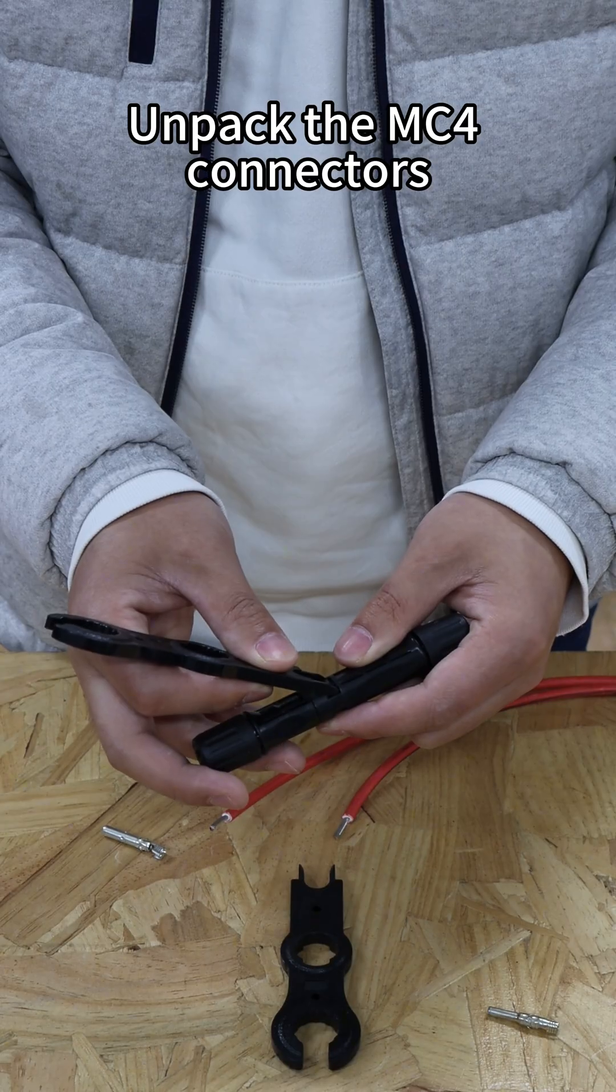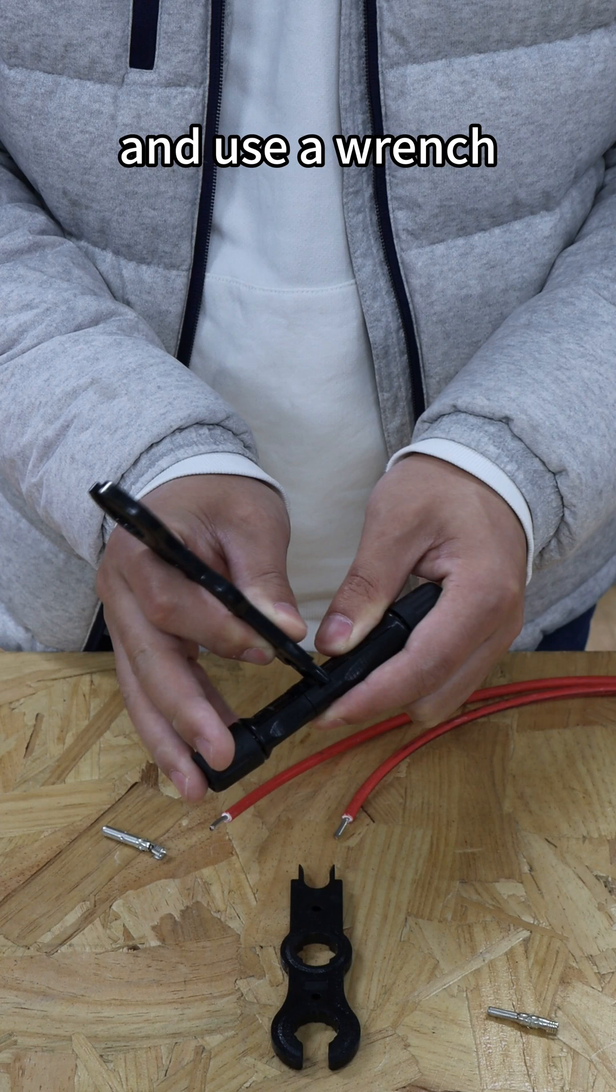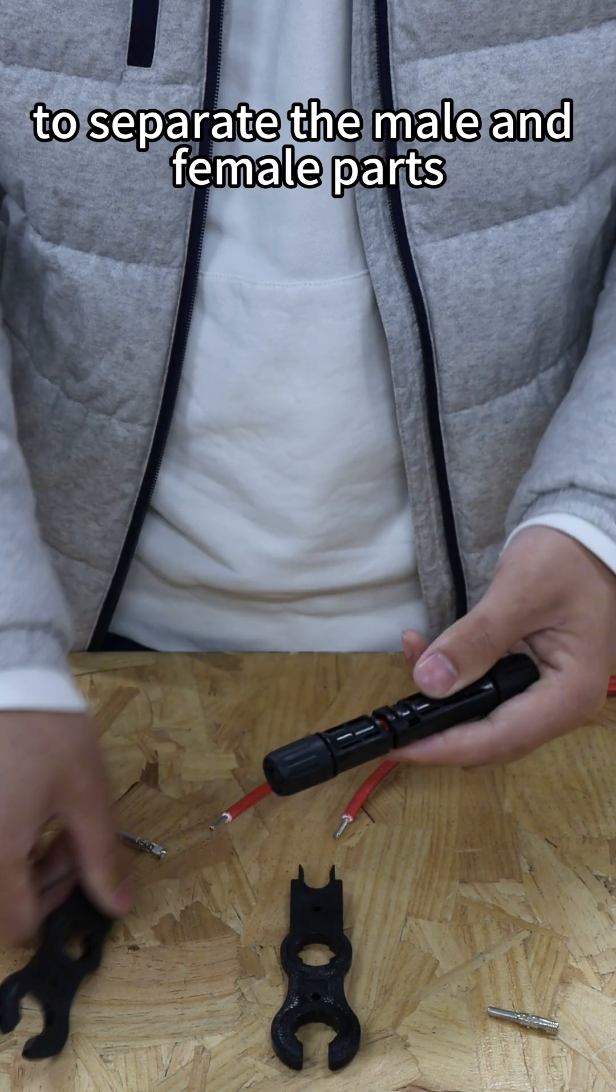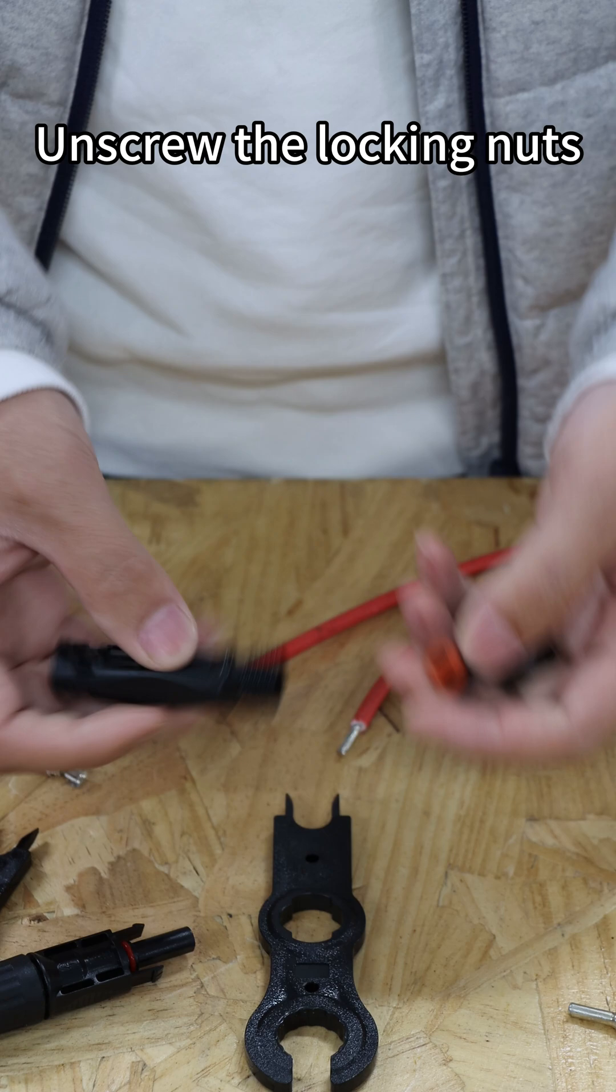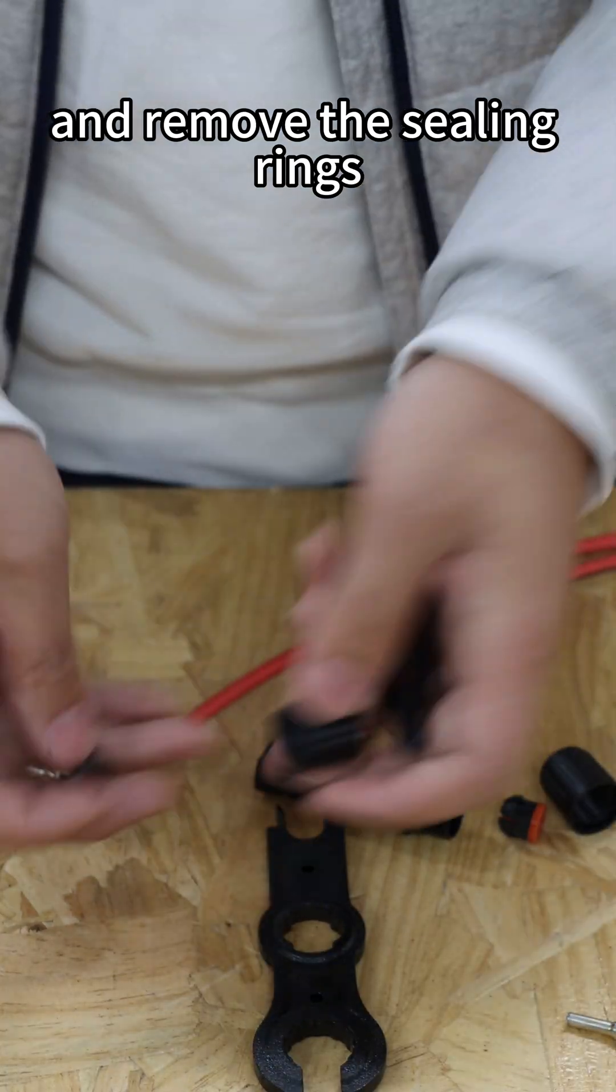Unpack the MC4 connectors and use a wrench to separate the male and female parts. Unscrew the locking nuts and remove the sealing rings.